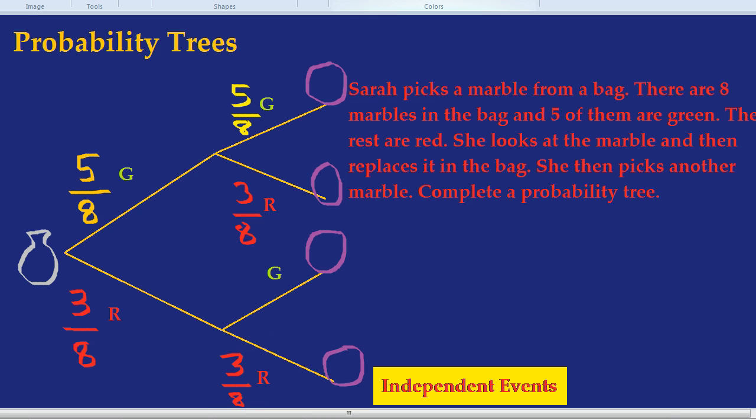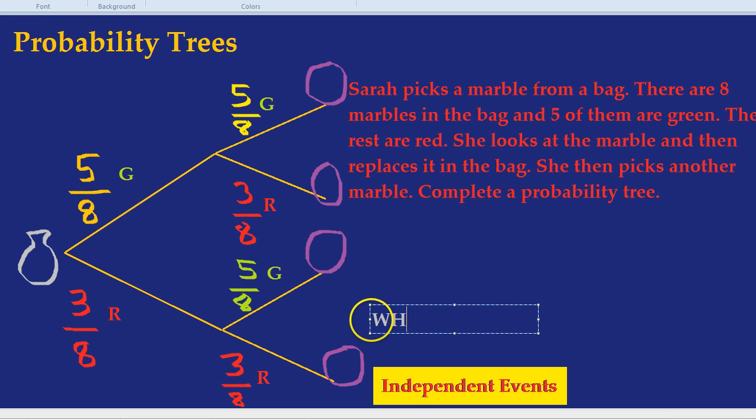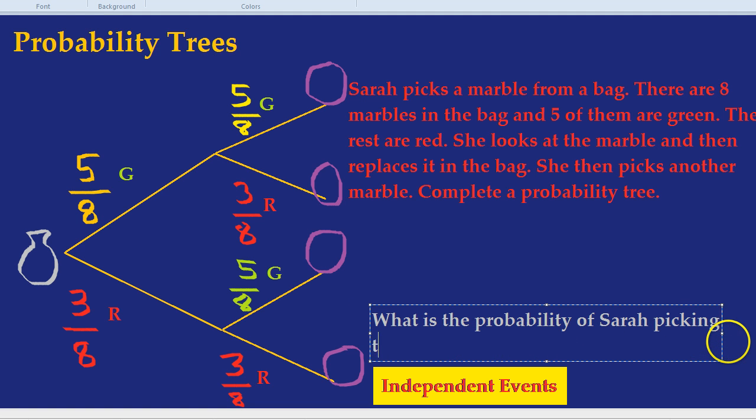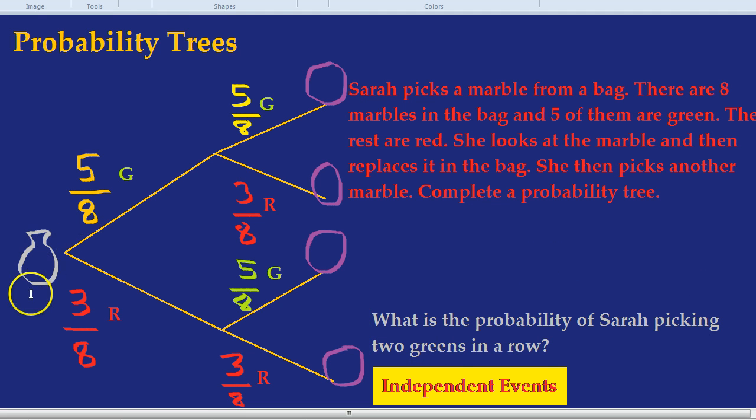Now we have a more advanced question. What's the chances of her getting two greens in a row? So a quick question: what is the probability of Sarah picking two greens in a row? Well you're probably wondering that's that one at the top isn't it? Green and green. But how do we go along the branches?